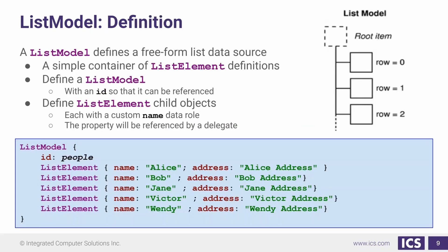Continuing on, we're going to look at the list model. The list model for QML is just a free-form list of data, essentially. It has some number of list elements inside of it, and each of these list items has some properties. So if we look at our example here, we have a list model of people made up of list elements. Each one of these elements has a name and an address.